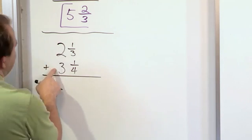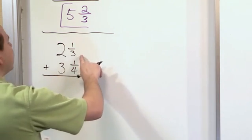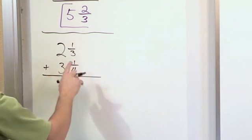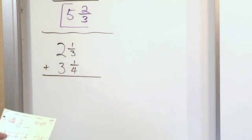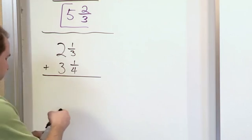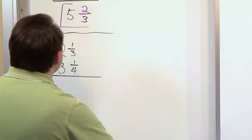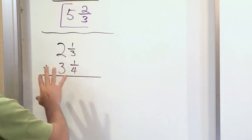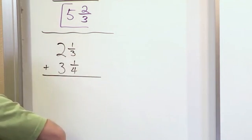We know that we can add these whole numbers together, but we're going to run into a problem because these fractions, the 3 and the 4, we don't have the same denominator, so that's going to cause us a problem. So the way I want to show you to handle this is, before we start adding anything together, we know we can add these, but before we do that, let's handle the fractional part.